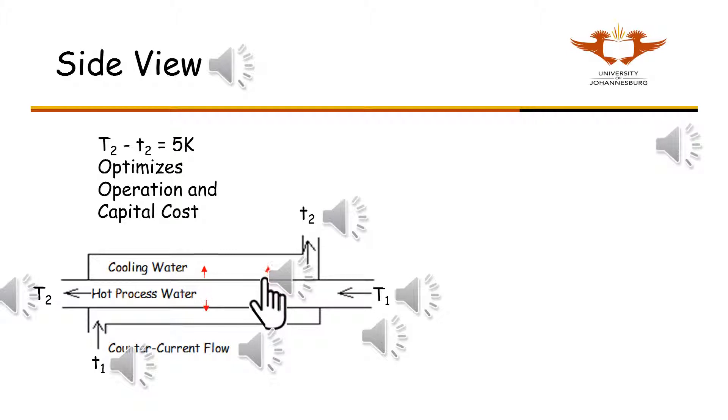Note that the flow of the process water is from right to left, and the cooling water from left to right, which is why it is called counter-current flow. At the end of the project, you will investigate the effect of having the flow co-current, i.e., both streams flowing in the same direction.